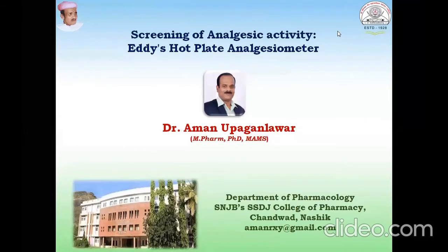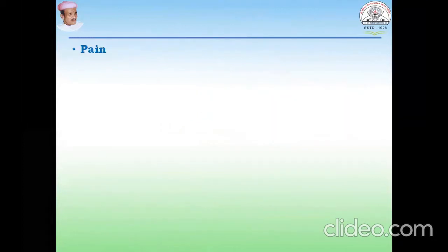Hello friends, today we are going to discuss about screening of analgesic activity by using the EDIS hot plate analgesic meter. First, what is meant by pain? Pain is defined as a highly unpleasant physical sensation caused by any illness or injury. Pain may occur because of mechanical injury, chemical injury, or because of thermal injury.